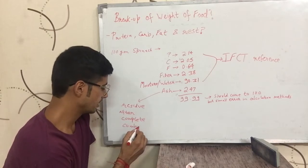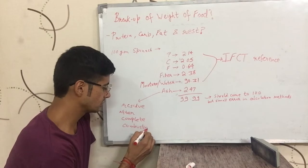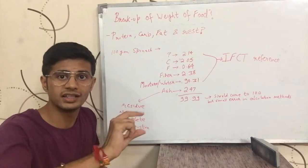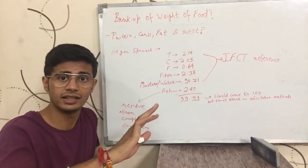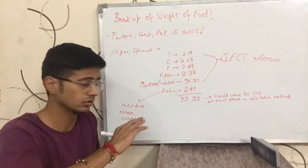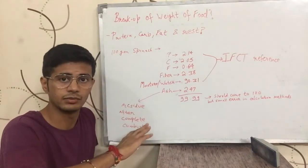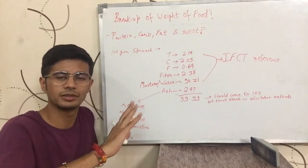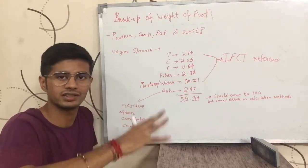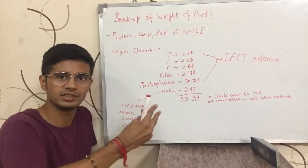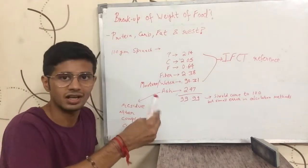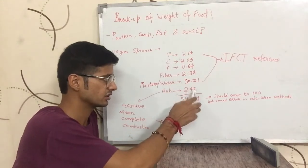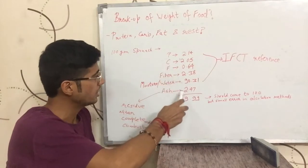What does ash mean? When you burn the food completely, the water will be removed and the organic material will be removed. If you burn it completely, the remaining material is ash. You don't need to go into details about organic or non-organic. If you burn it completely, it will be 2.47 grams.